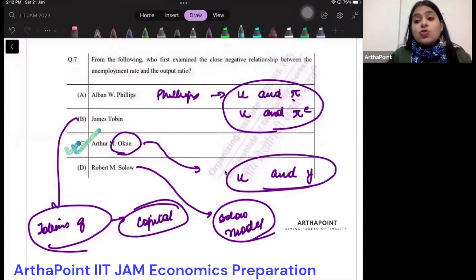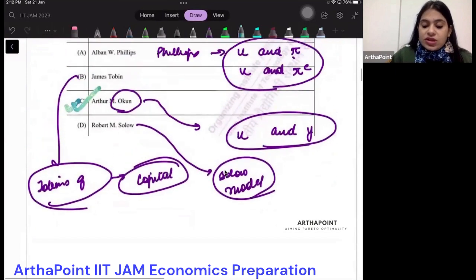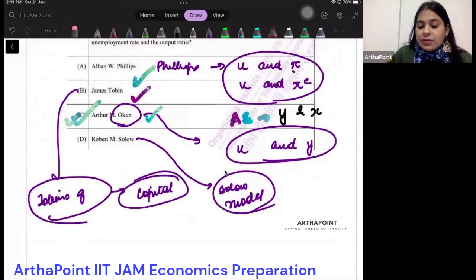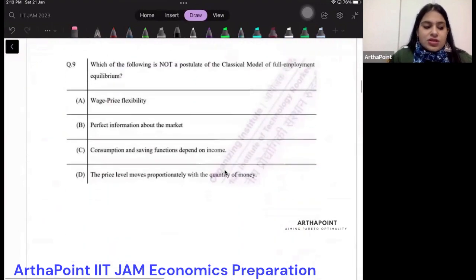Last to last time in 2021 also they asked a question on Okun's law, but there they asked to find the output level in the economy. This time they've just given the question like this. So the questions are not difficult - you should be thorough with the equation of Okun's law, with Tobin's queue, with the Phillips curve equation, with the AS curve equation which links y and pi (inflation and output), with the Solow model equation. Equations have to be very thoroughly done from this topic.